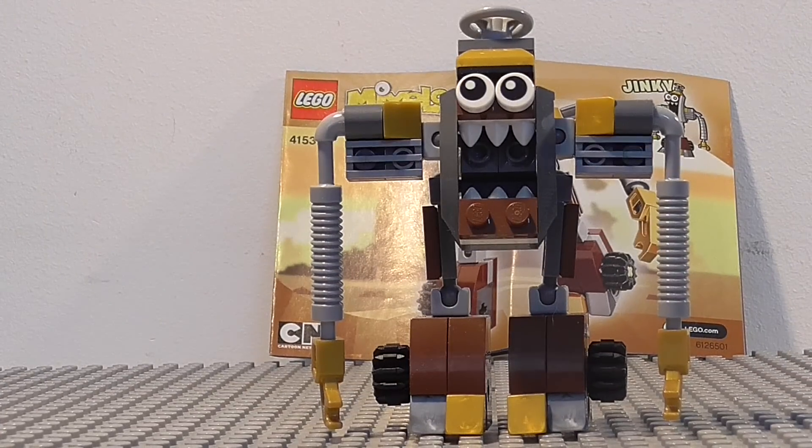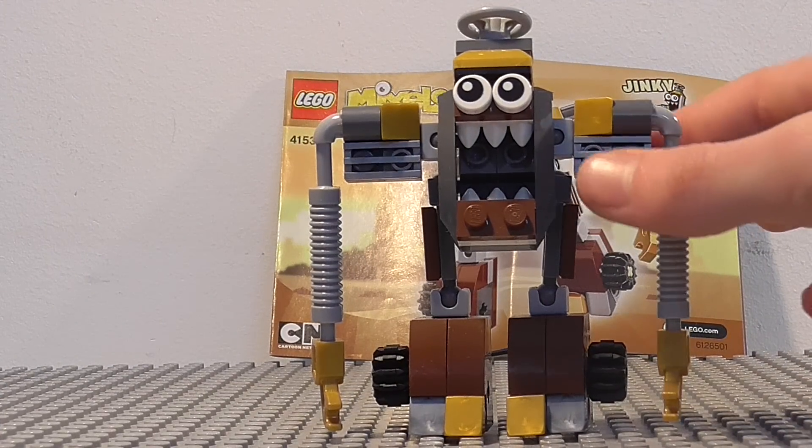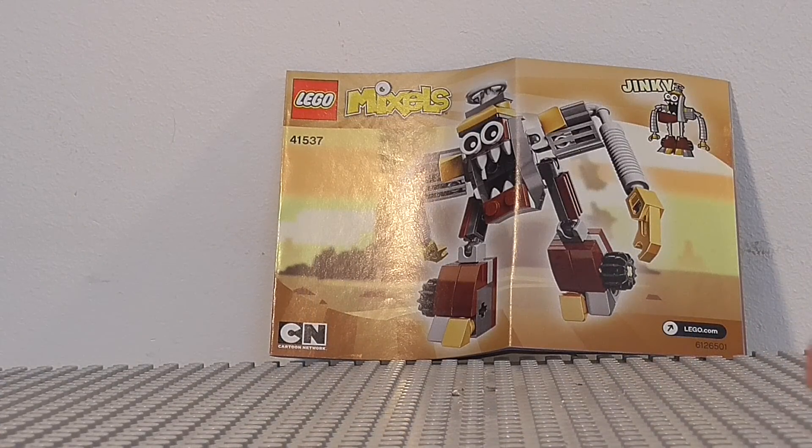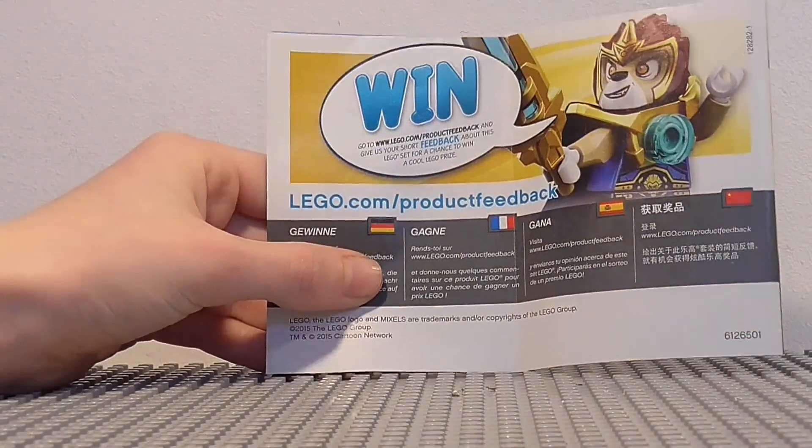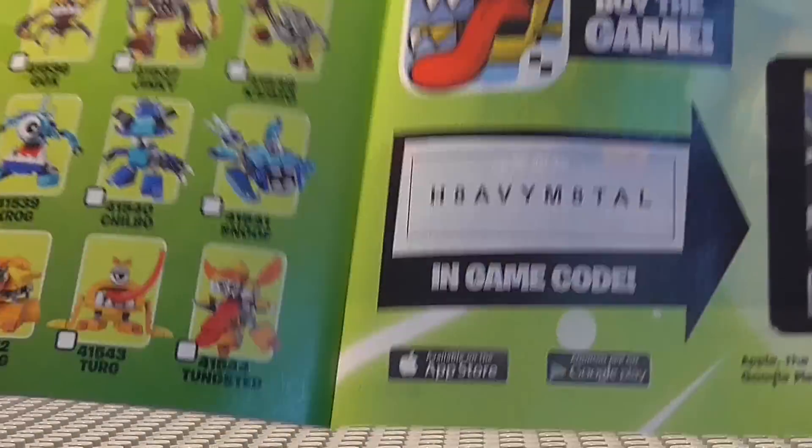Okay, so here is Jinky. Let's take a particular look at the instructions first of all. So moving him to the side there, you can see on the front it is the same as the back. On the back we have the win with Laval there and then in the back here there is the game code.